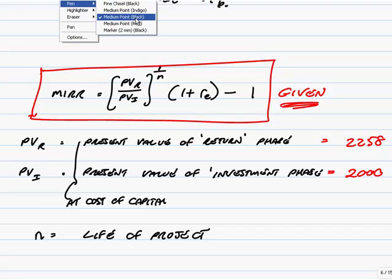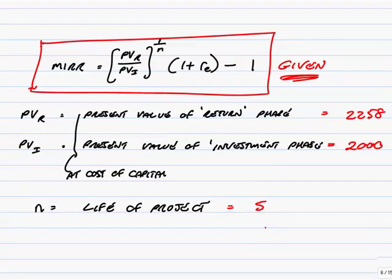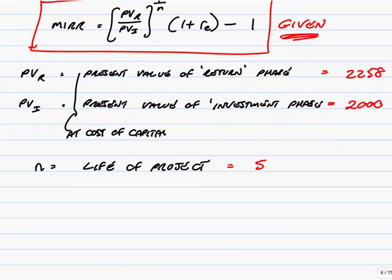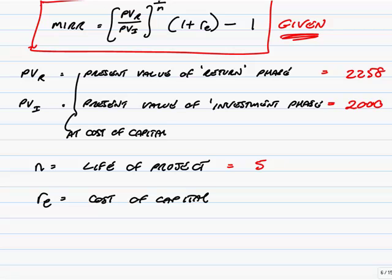And of course, here no problem, and it won't be in the exam. This project lasts five years. Finally, RE is the cost of capital. And for our example, it was example one again. For our example, it's 10% or 0.1.